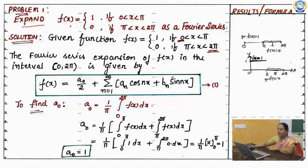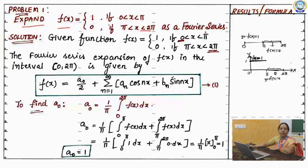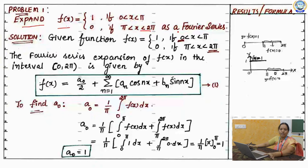Expand f of x equals to 1 if 0 less than x less than pi — that means x lies between 0 and pi — and your function f of x equals to 0 if pi less than x less than 2 pi, as a Fourier series. They gave you one discontinuous function and we have to expand this in the form of a Fourier series.